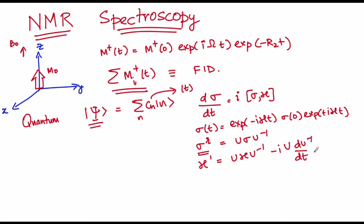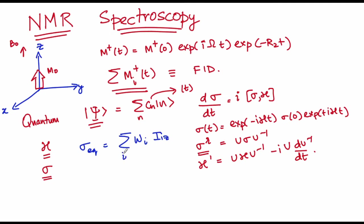We applied it to a bunch of examples where we saw for a given Hamiltonian how the density matrix changes, and during this we also understood that the equilibrium density matrix is going to be given by the sum of all the Zeeman terms for each of the spins that are present.